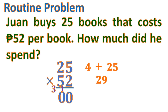Then to find the hundreds place, we multiply the tens place digits: 2 times 5 is 10. Then add the carry of 3, so it will be 13. And so we have 1,300. Since this is in pesos, we'll put the peso sign. All in all, Juan spent 1,300 pesos.